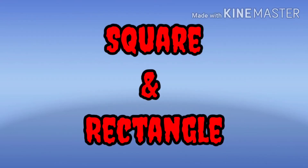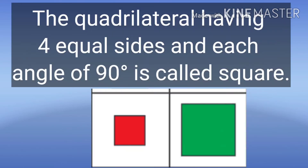Now let's know about square and rectangle. A quadrilateral having four equal sides and each angle of 90 degrees is called a square. You can look at the given figure — it is a square and each of its angles measures 90 degrees.